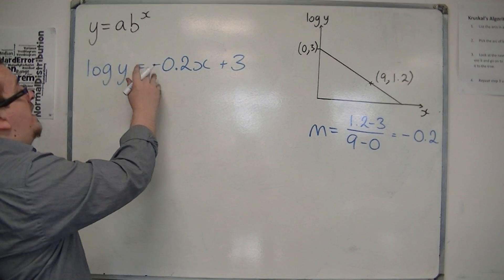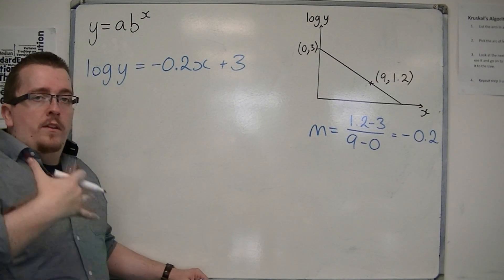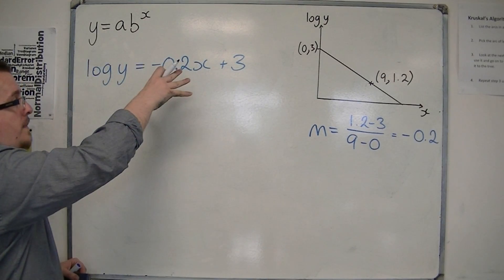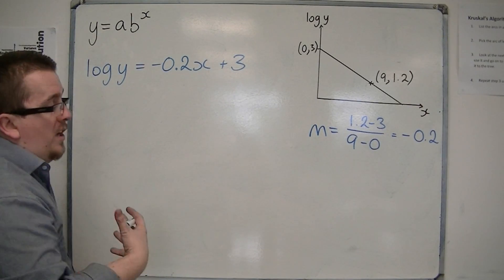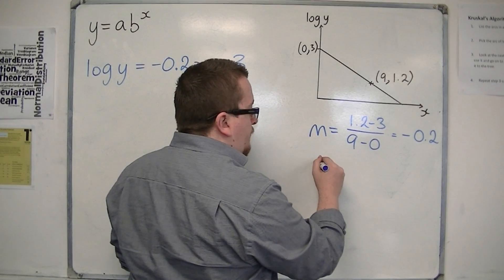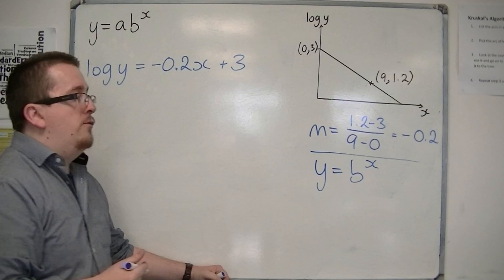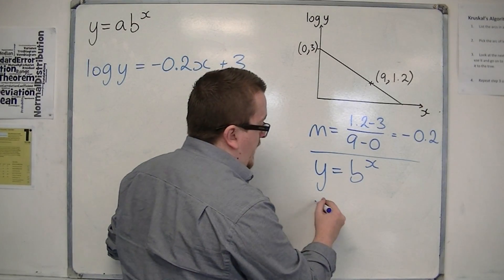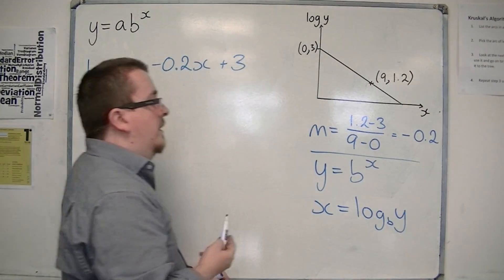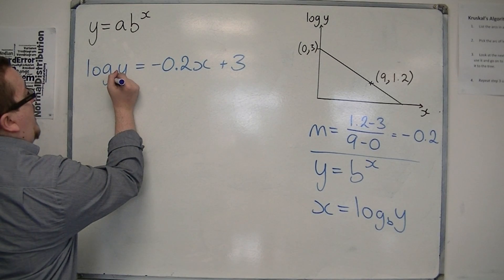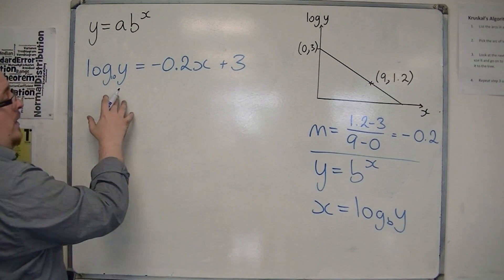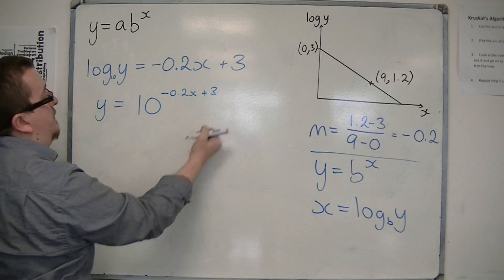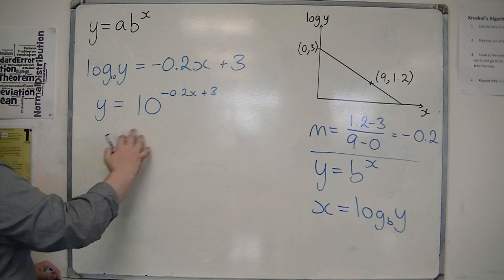So this is the equation that I'm working with, and I need to get it into this format. So the first thing that I'm going to do is invert it from logarithmic notation to exponential notation. So if we write y equals b to the x, going from exponential notation to logarithmic notation, I write that as x equals log base b of y. So to invert this, if the base is 10, then that means that y is equal to 10 to the minus 0.2x plus 3. So that is how I'm going from logarithmic notation to exponential notation.